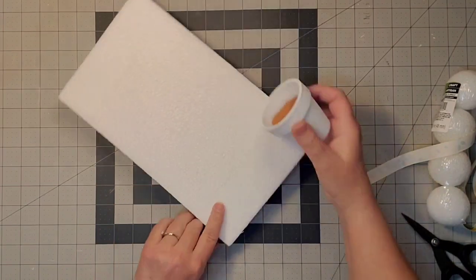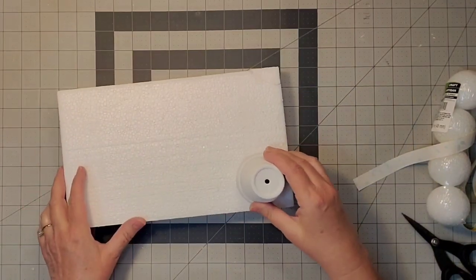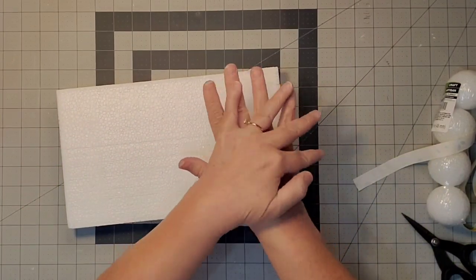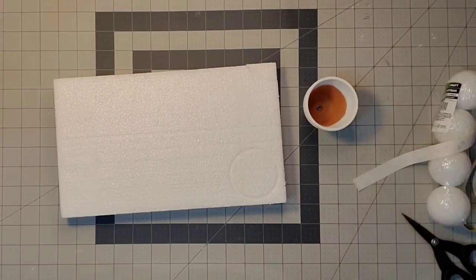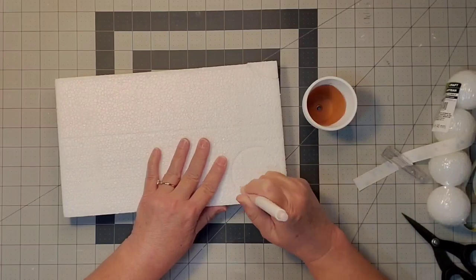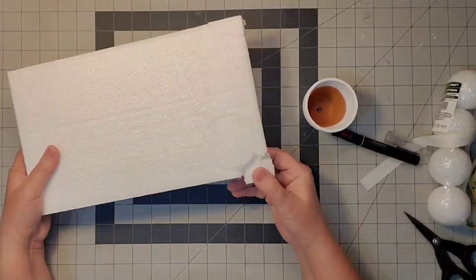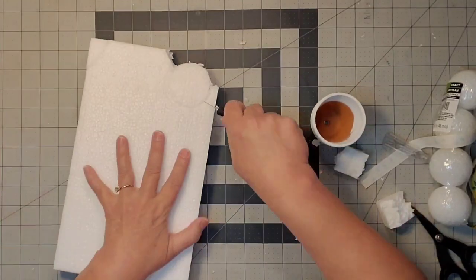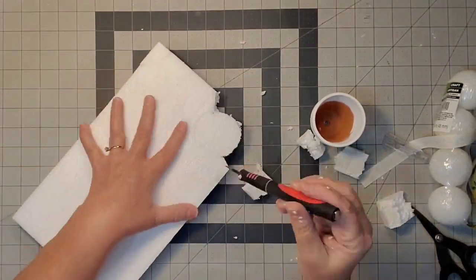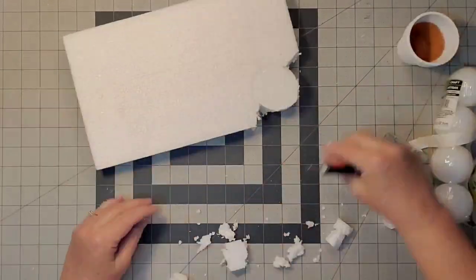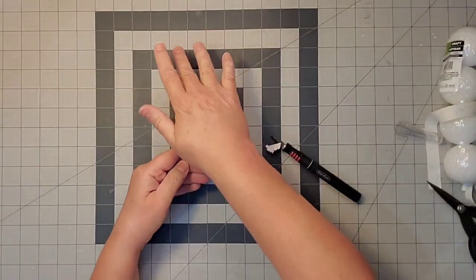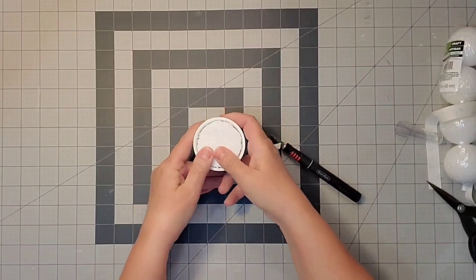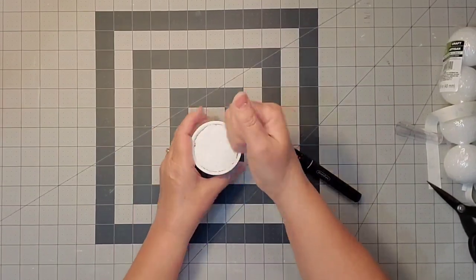Now I'm taking my little clay pot and pressing it into this styrofoam to indent the middle circle. Then I'll come in with my utility knife and hack at it until I get a circle cut out. I'll press it right down into my pot, and it actually fits really well.